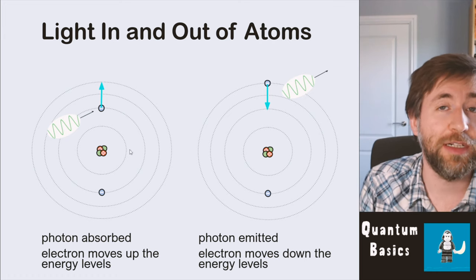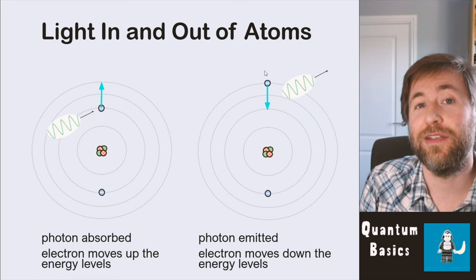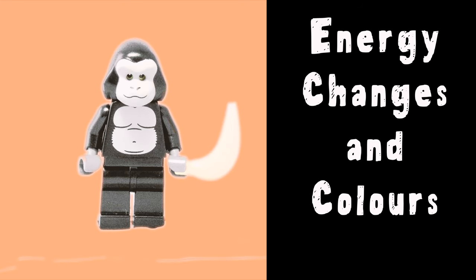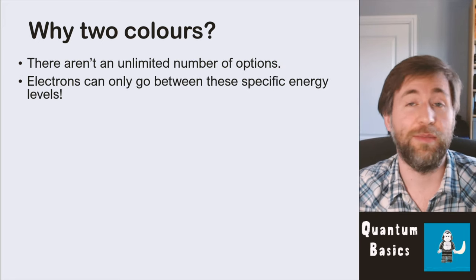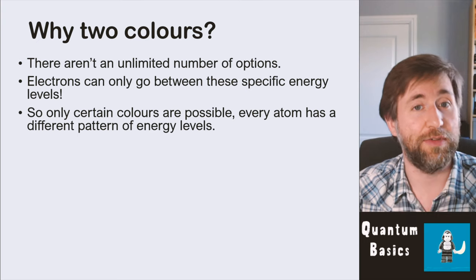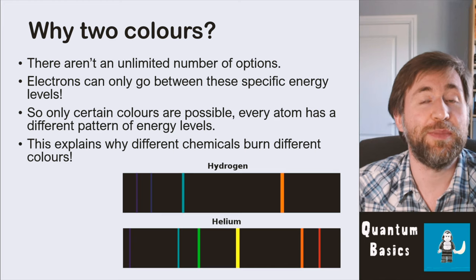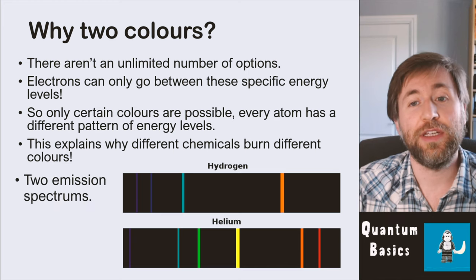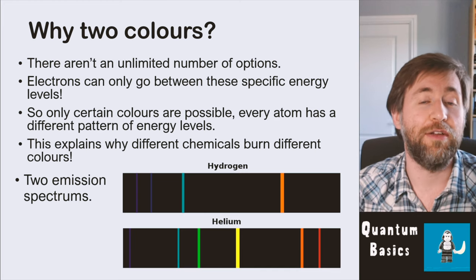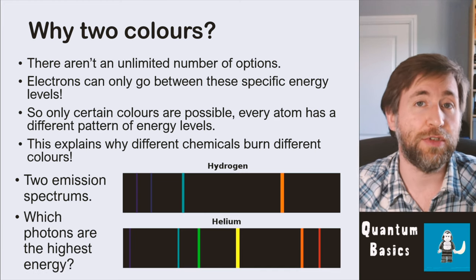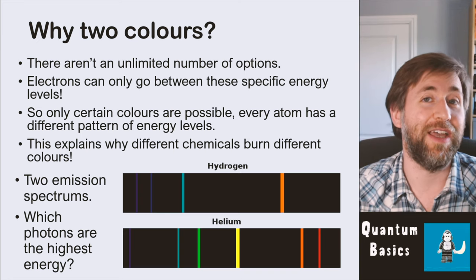When the electron goes up an energy level, we call that excitation. When it comes down the energy level, we call that de-excitation. So why are there so few colours when the match is lit? There isn't an unlimited number of options — there are only specific energy levels, so they can only have certain energy level changes, so the light can only have certain colours. The photon's colour is governed by its frequency, and frequency is governed by energy.